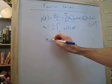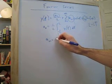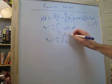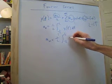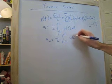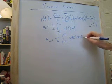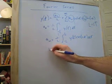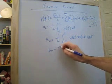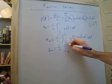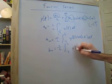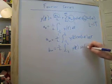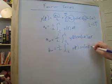So a_n is equal to 1 over l from negative l to l, and that's going to be y of t cosine n t dt, and b_n is equal to 1 over l, integral from negative l to l, y of t sine n t dt.